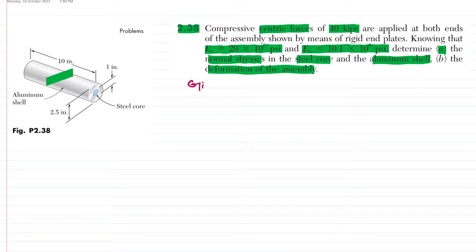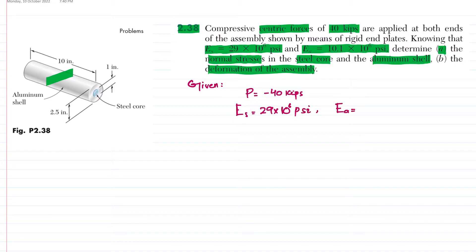Let's write the given data. The centric force P is equal to negative 40 kips (compressive). The modulus of elasticity for steel Es is 29×10⁶ psi, and for aluminum Ea is 10.1×10⁶ psi. The assembly consists of an aluminum shell surrounding a steel core, compressed by the force P applied through the end plates.